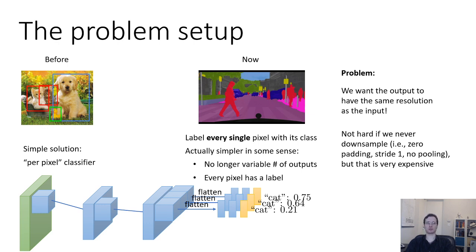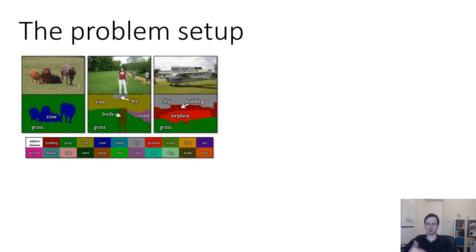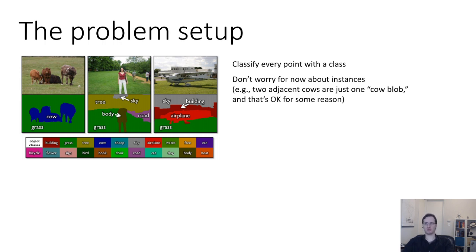And you can absolutely do this. But this is computationally very expensive because you have these gigantic convolutional response maps, and you're going to need quite a few layers because you want a wide context. So you either have huge filters or many layers, both of which are extremely expensive. Don't worry for now about instances. So if you have two adjacent cows, it's just kind of one cow blob, and that's, I guess, okay for some reason. Computer vision people don't seem to worry about this.